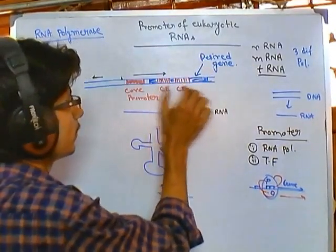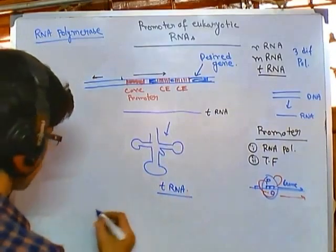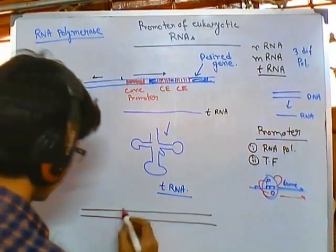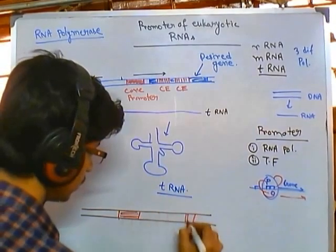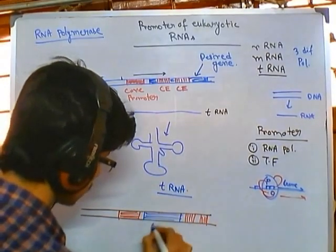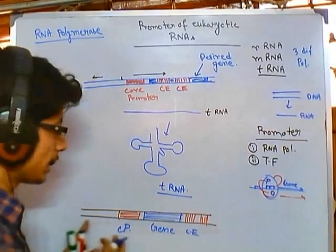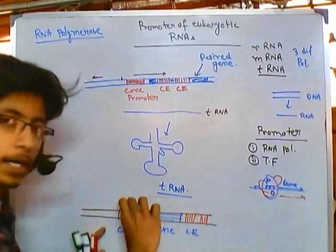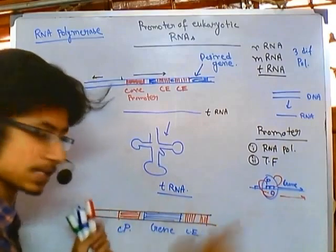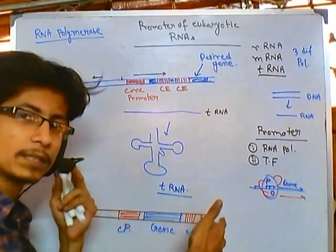Sometimes the control element can also be present downstream of the desired gene. In that arrangement, the core promoter is placed upstream, then comes the desired gene, and then the control element follows downstream. So the gene is present somewhere in the middle of the promoter region — with the core promoter on one side and the control elements on the other. Both regions together are considered a single promoter, just distantly placed. That is the unique beauty of this system.